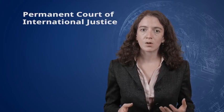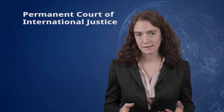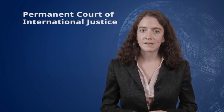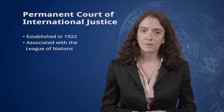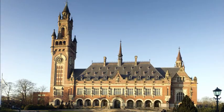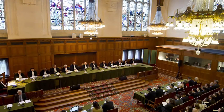The ICJ can be considered the successor to the Permanent Court of International Justice, which came into existence in 1922 and was associated with the League of Nations. The Peace Palace in The Hague served as the home of the Permanent Court of International Justice, and it is now the home of its successor, the ICJ. The Permanent Court of Arbitration also shares the Peace Palace with the ICJ.